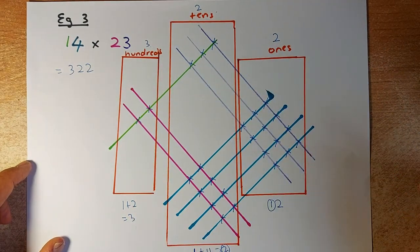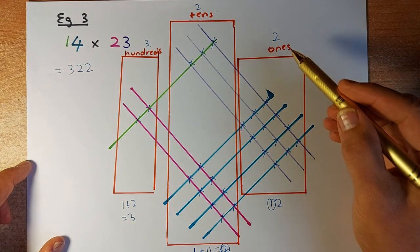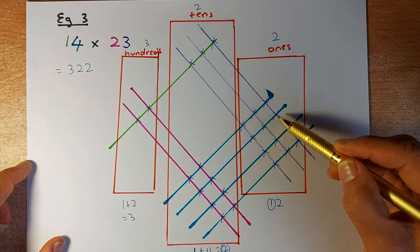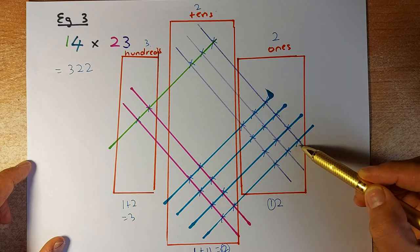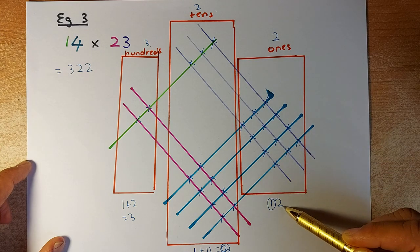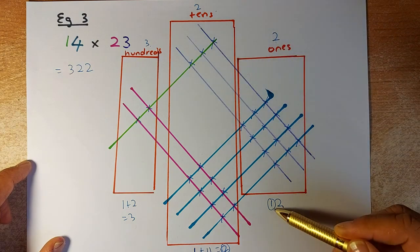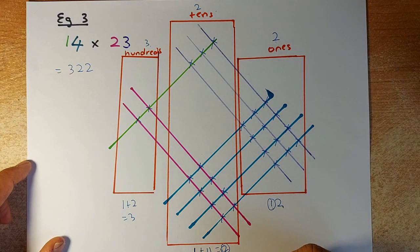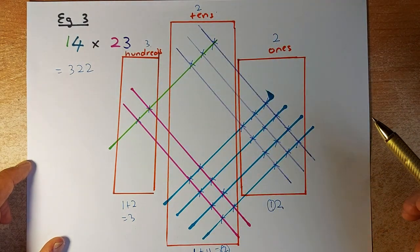You're going to find the points of intersection. For the ones, we have 1, 2, 3, 4, 5, 6, 7, 8, 9, 10, 11, 12. So you write as 12. There's no 12 ones, so you put 2 and this 1 will carry to the next column, which is the tens column.